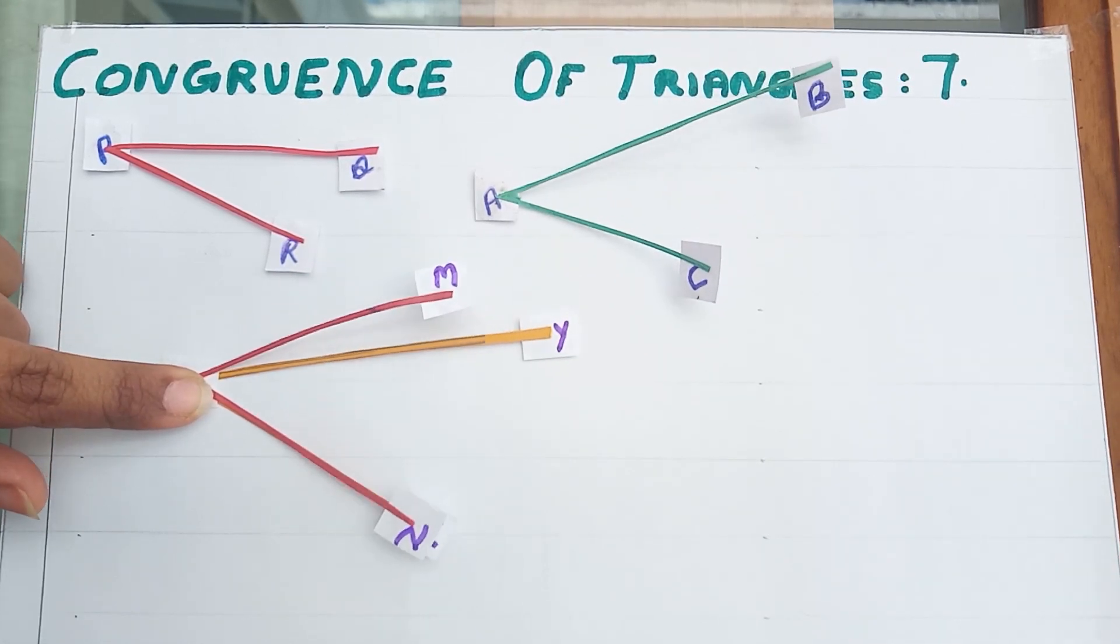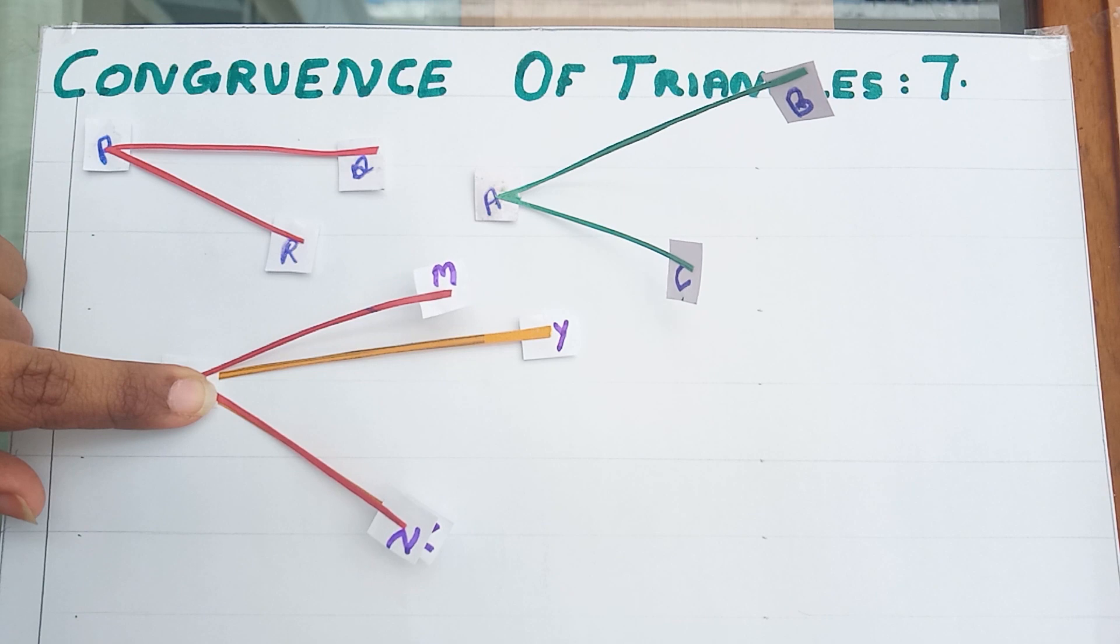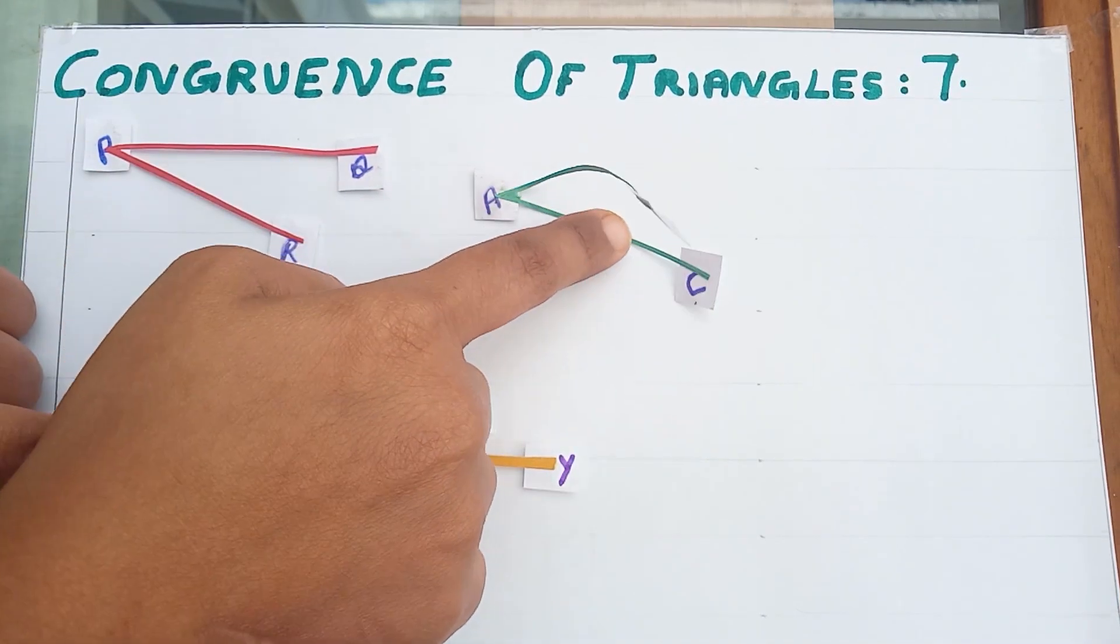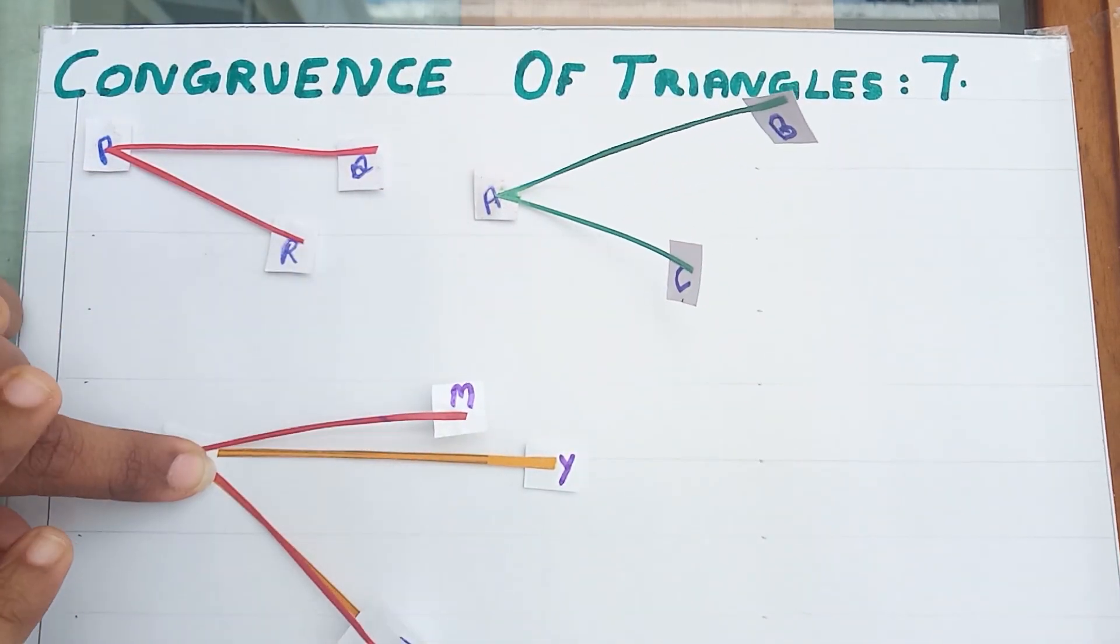From this I can conclude that if the measure of angles are not same means that two angles are not congruent. If the measure of angles are same these two angles will be congruent.